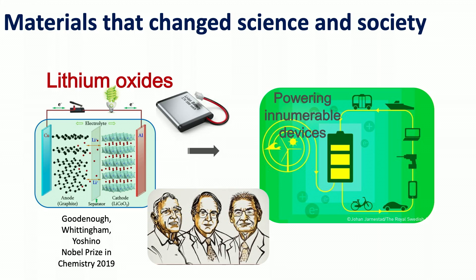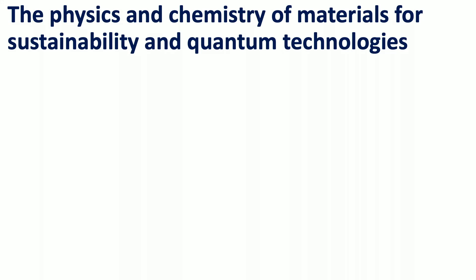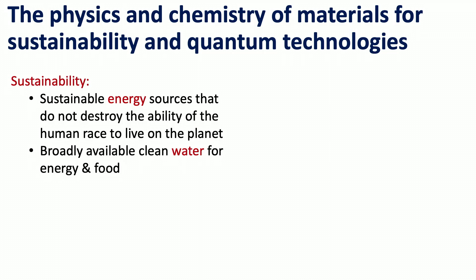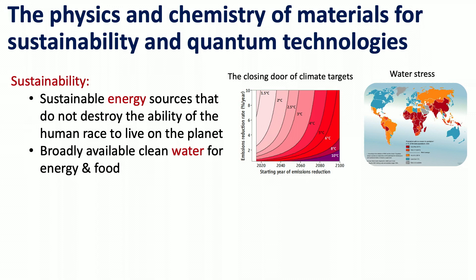These solid materials also interface with liquids, which is why it may be interesting to study materials. What we have been interested in over the last 10 or 15 years is the physics and chemistry of materials for sustainability and quantum technologies. Sustainable energy sources are those that do not destroy our ability to live on the planet. We want materials to harness solar energy and create electricity or drive chemical reactions — this was also discussed eloquently this morning in the opening talk about climate change.